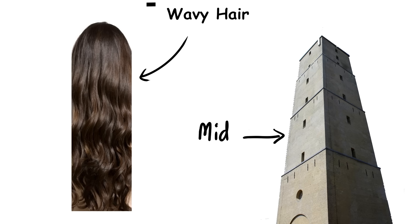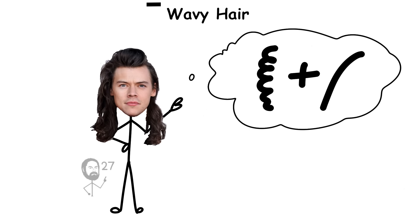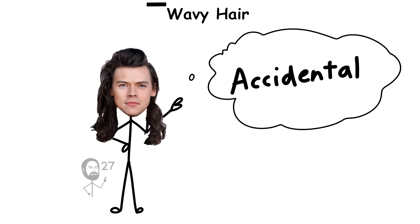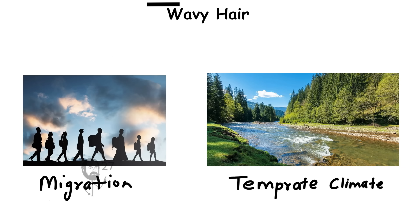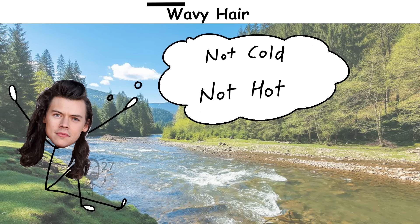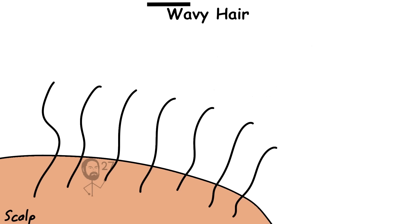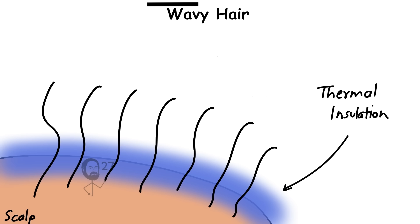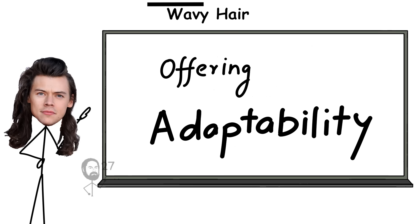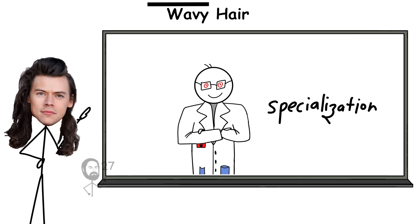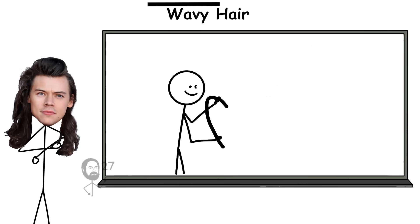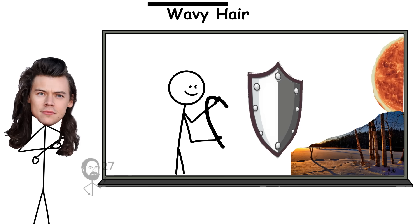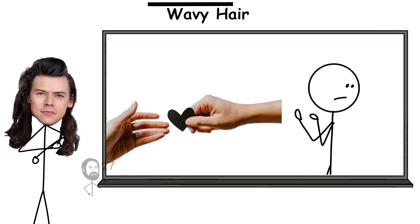Wavy hair sits at a structural midpoint between straight and curly hair, and that hybrid shape may not be accidental. Some anthropologists suggest it emerged as humans migrated into varied temperate climates, environments where neither intense heat nor extreme cold dominated. The gentle S-shaped waves helped balance thermal insulation with moderate airflow, offering adaptability rather than specialization. In this sense, wavy hair may represent an evolutionary compromise, flexible enough to provide mild protection against both heat and cold, without committing to the extremes of either.